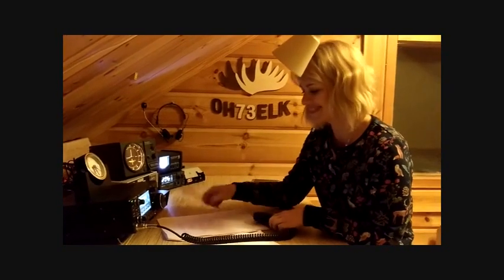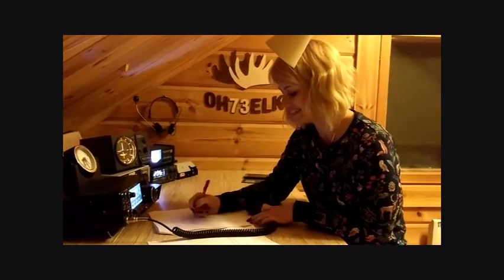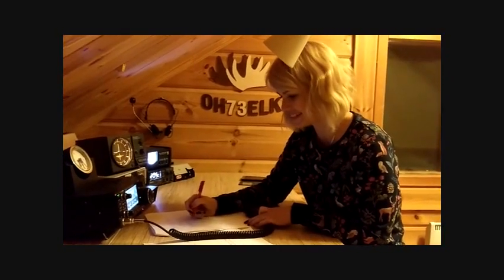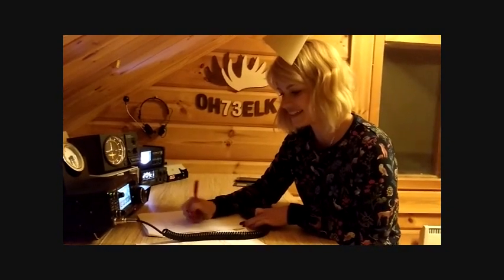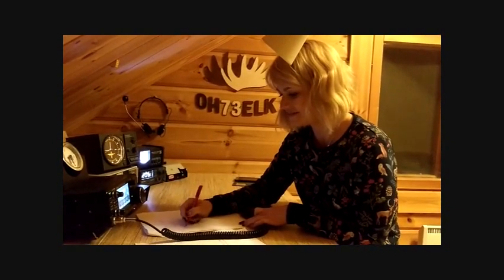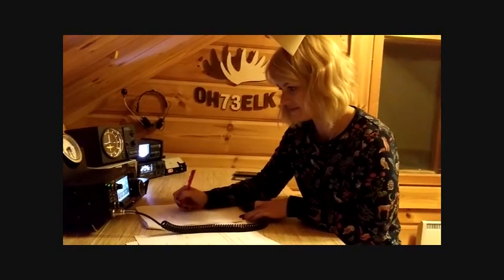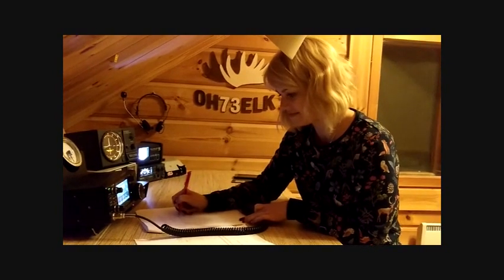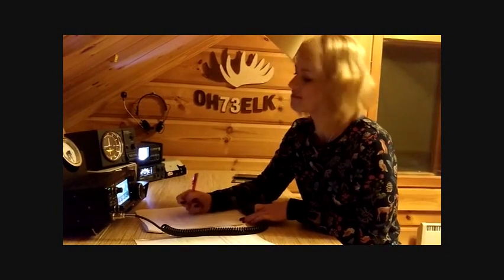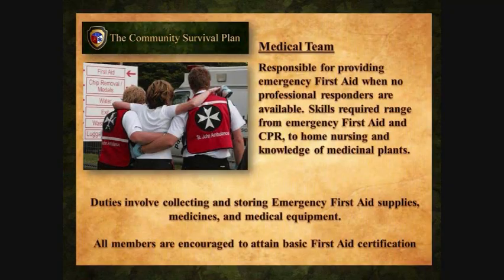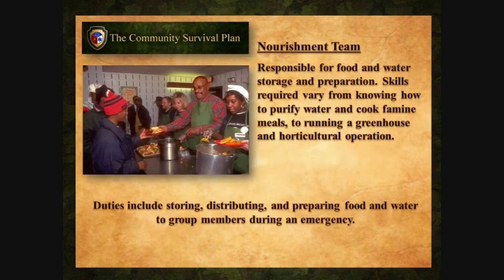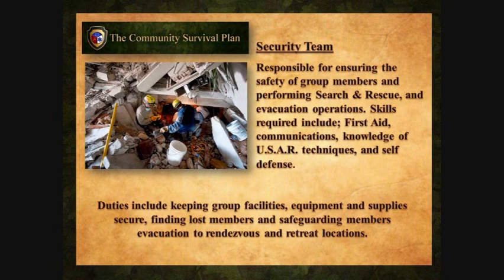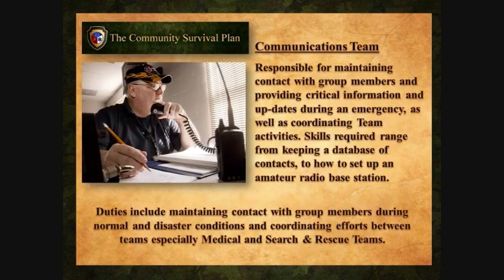So this gave me five key areas of expertise needed in a survivalist community, and five individuals or teams dedicated to fulfilling those needs. They are: medical team, shelter team, nourishment team, security team, and communications team.